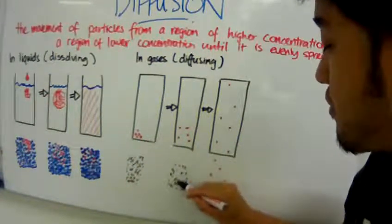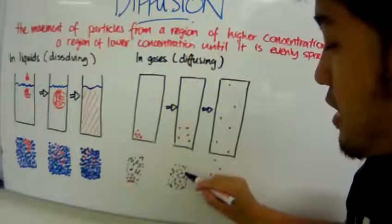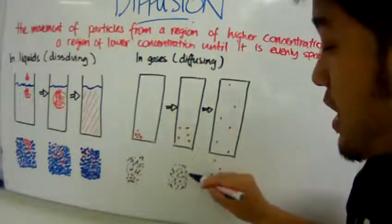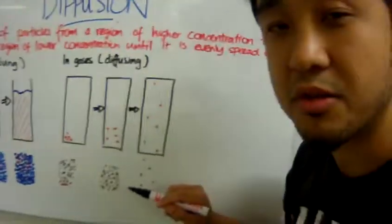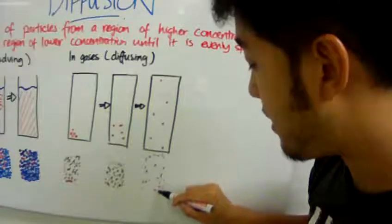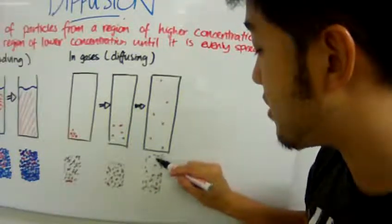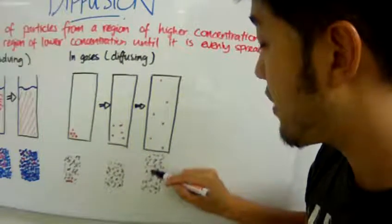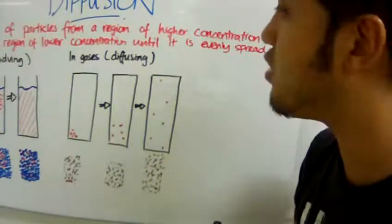As it spreads out, the air particles will move past the perfume particles and the perfume particles will also do the same with the air particles and move around. Eventually, the whole room will smell of perfume with all the gas particles surrounding it. So that is the concept of diffusion.